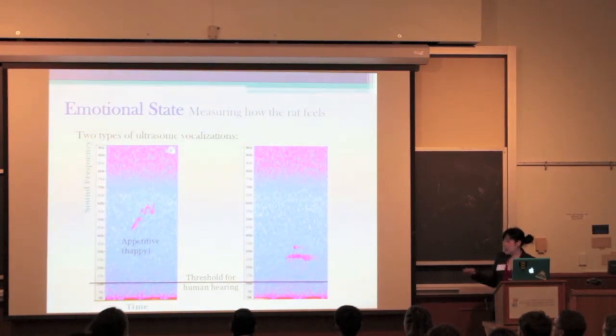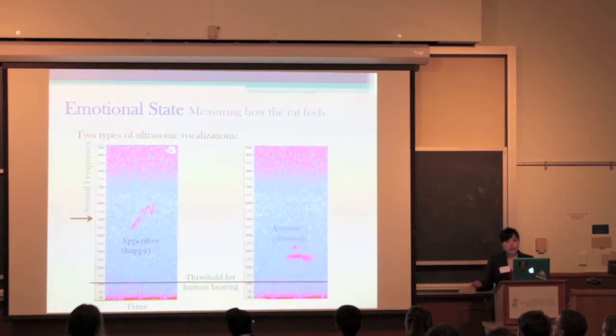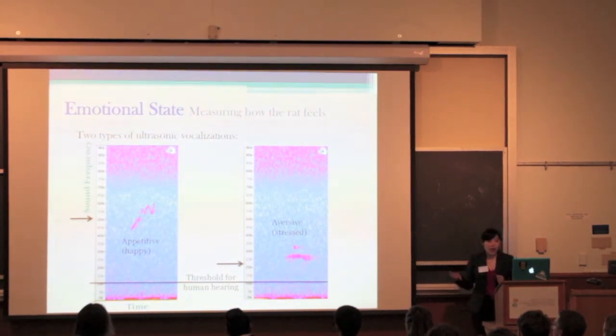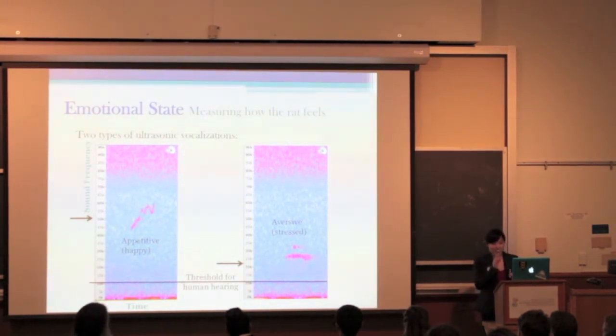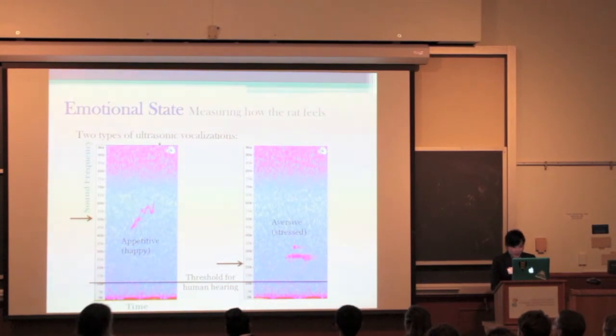The first one is the appetitive, or happy vocalization, which is usually found around 50 kilohertz. The second one is the aversive, or stress vocalization, which is usually around 22 kilohertz. After we downsample the vocalizations, you can hear the clear differences between these two calls. Now, these are very quiet, and you all have been very quiet, but be extra quiet so you can hear these things. It's really cool. So here is the appetitive, or happy vocalizations. Yeah, almost like a bird whistle, right? And then this is the aversive, or stressed vocalization.